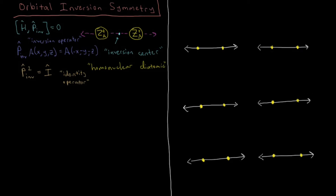In this video we're going to talk about inversion symmetry and how we use the labels G and U to denote the symmetry of orbitals and identify them. We have our internuclear axis here and some homonuclear diatomic — homonuclear meaning that both nuclei have the same atomic charge, thus they are the same element, for example hydrogen and hydrogen, carbon and carbon, neon and neon, etc.